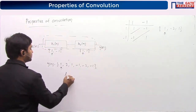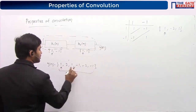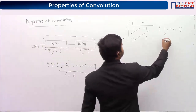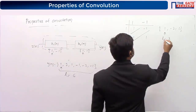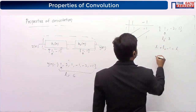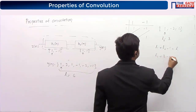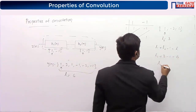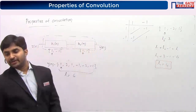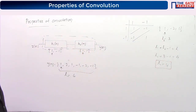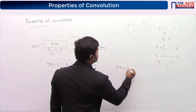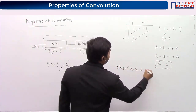Now we observe that the length of the output sequence is 6 units, and the length of the impulse response is 3 units. Using the formula L = L1 + L2 − 1: L1 + 3 − 1 = 6, so L1 = 4. Therefore x(n) has 4 samples: a, b, c, d.